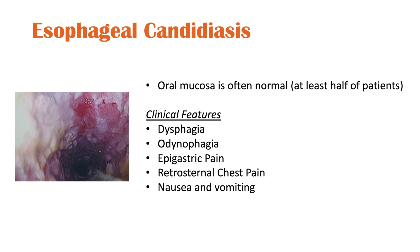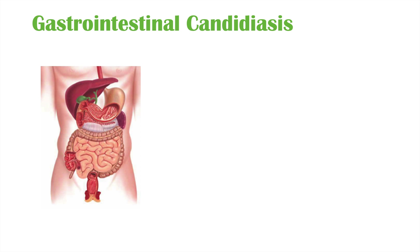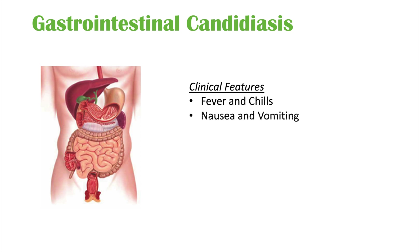Patients with esophageal candidiasis can also experience nausea and vomiting. Gastrointestinal candidiasis, seen in immunocompromised patients, is a more significant candida infection. Clinical features include fever and chills, nausea and vomiting, epigastric pain, abdominal pain, and in some cases a palpable abdominal mass.